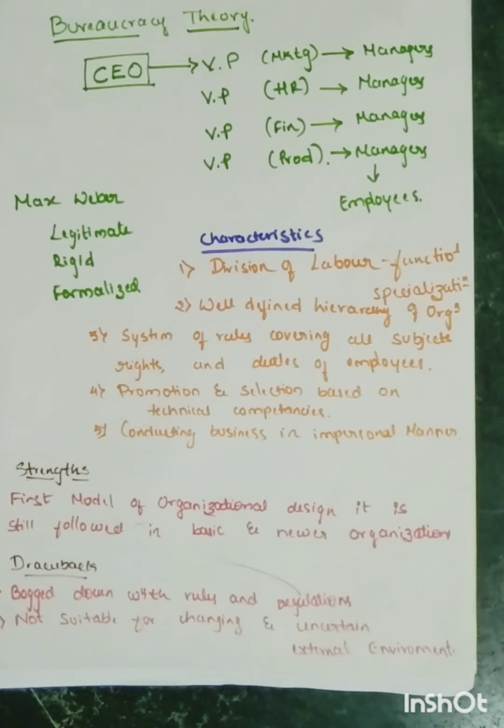The drawback is that in this theory, according to this model, if any organization chooses this model, then that organization will have a set of rules and regulations to be followed. The organization will be bogged down with rules and regulations for its employees, for its various middle management, or the top management authorities as well.